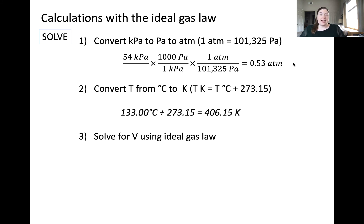Next converting temperature from degrees Celsius to Kelvin. We can do this by simply adding 273.15 to our Celsius temperature for a Kelvin temperature of 406.15.